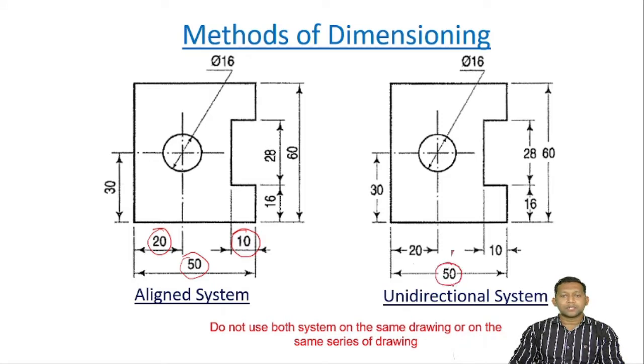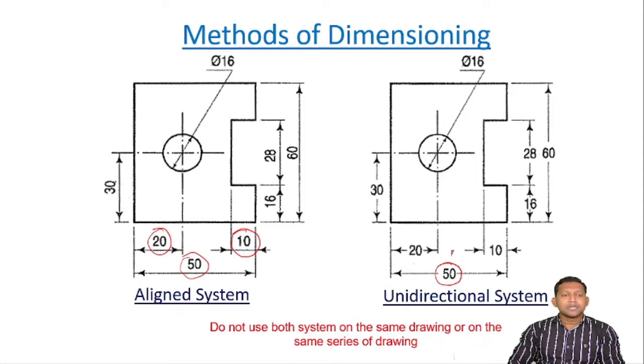In the unidirectional system, the dimension line has a break in the middle, and the value is placed at the center of that break. That is the second difference. Coming to the third difference — it concerns dimensioning for vertical lines.